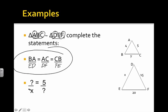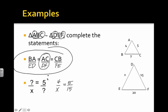We need to find what over X equals 5 over what. X is DE, and DE corresponds to AB, which is 4. So we have 4 over X. Looking at the figure, 5 is AC, and our similarity statement says AC is proportional to DF, which is 15. So we have 4 over X equals 5 over 15, which reduces to one-third. That means 4 equals X over 3, so 3 times 4 equals X. Therefore X equals 12.